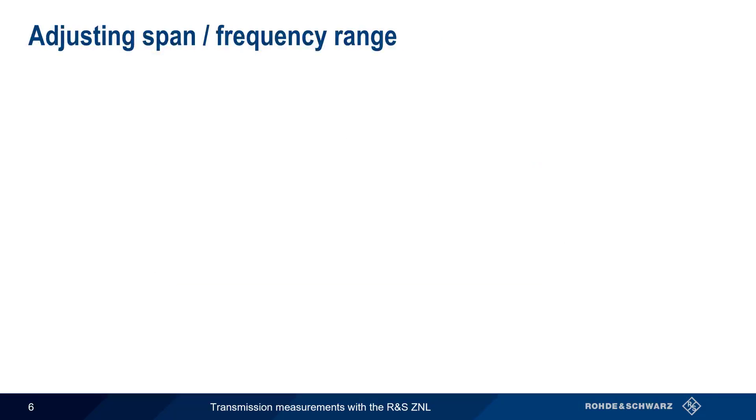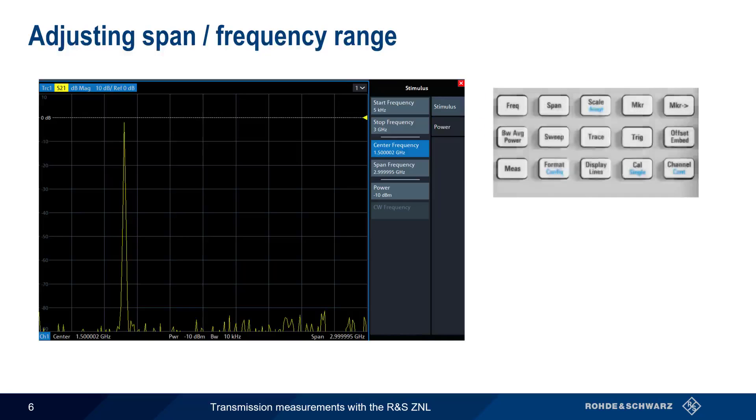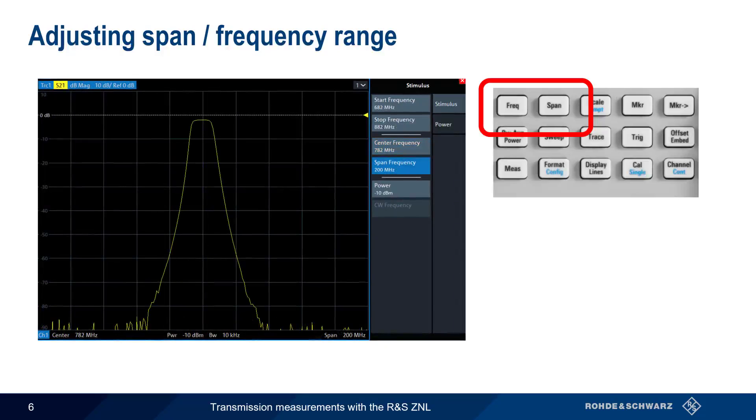After selecting S21 or S12, the results are automatically displayed on the ZNL screen. If the displayed frequency range or span needs to be adjusted, use the Frequency and Span hard keys and associated soft keys to adjust the center and span, such that the trace is easier to read and work with.